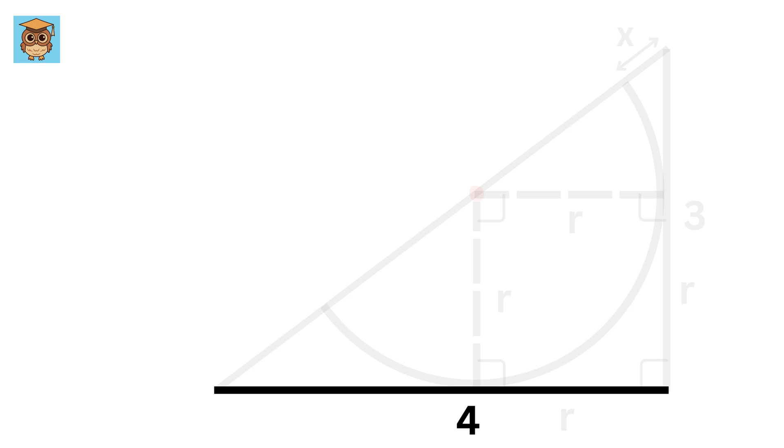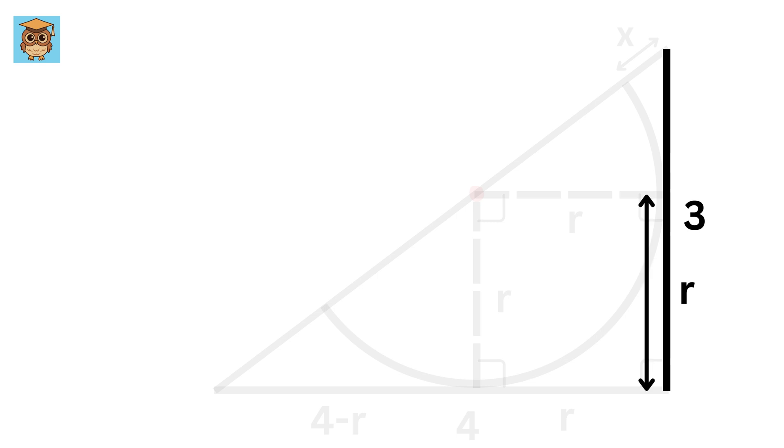Now consider this length. This is 4, and this is R, so this will be 4 minus R. And for this length, this is 3, and this is R, so this will be 3 minus R.